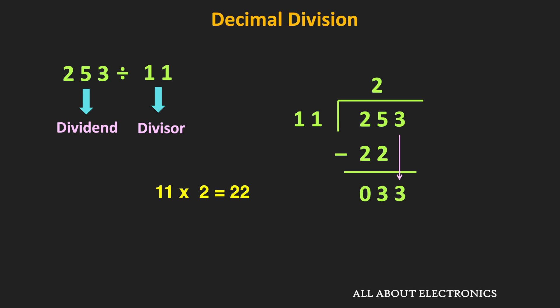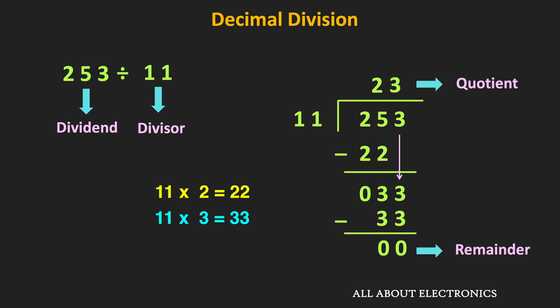Once again, we compare 33 with 11. Here, 11 can go three times into 33, so in the quotient we write 3. After performing the subtraction, the remainder is equal to 0. In this way, we got our quotient and the remainder. That is how we usually perform division in decimal.